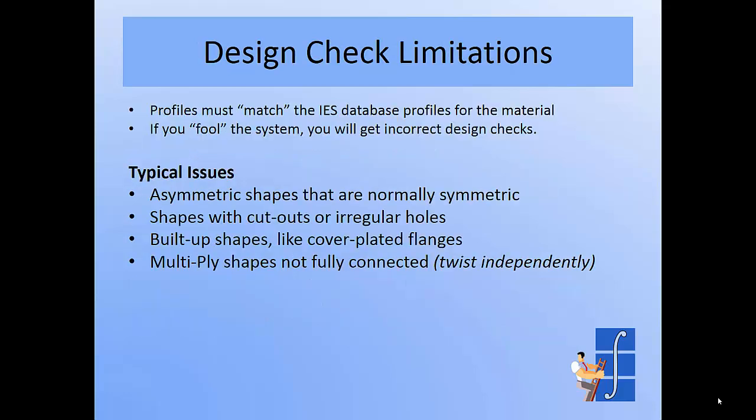There are some design check limitations. You have to match the profiles in the existing IES database for shapes. Visual Analysis knows how to design a wide flange for hot rolled steel, for example, but there is no bent hat shape in the AISC steel database, so you can't export a shape like that and get design checks in Visual Analysis. Similarly, if you build up or cut down regular shapes in ways that would change B over T ratios, for example, those will not be supported.